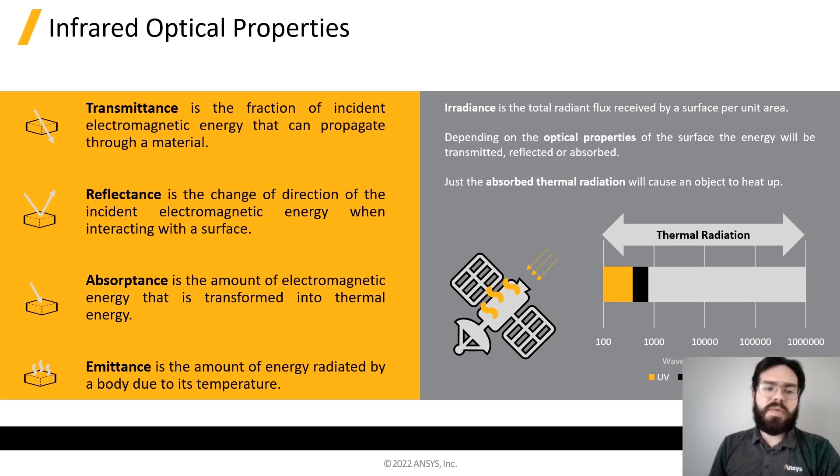Then we have Reflectance, which we can understand as a change of direction on the incident energy when interacting with a surface. Then we have Absorption, which refers to the amount of energy that is assimilated by the system and then transformed to thermal energy.